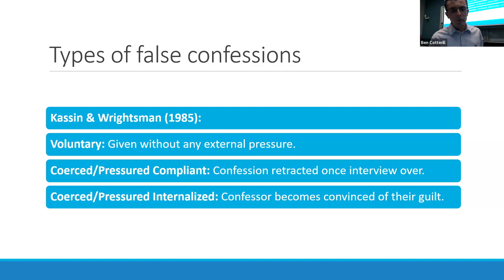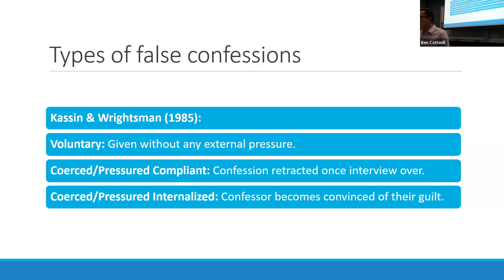What reasons might there be for someone voluntarily confessing to a crime they didn't commit? Responses from students include: trying to take the blame to protect someone else, seeking attention, or being blackmailed by the actual perpetrator.